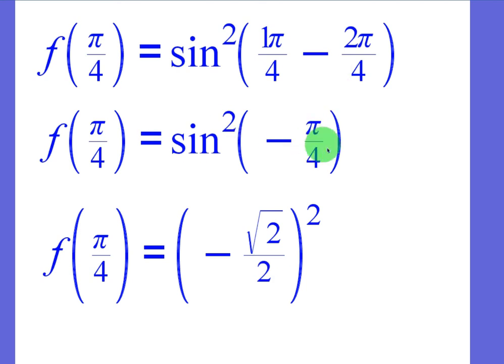So it's sine squared of negative pi over 4. Again, you evaluate the sine first, and then you square it. Sine of negative pi over 4. If you remember on the unit circle, it's going to be down here, which is the same as 315. The y value is going to be negative square root of 2 over 2.